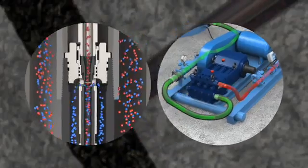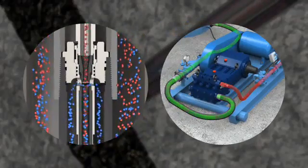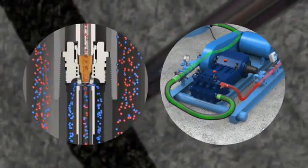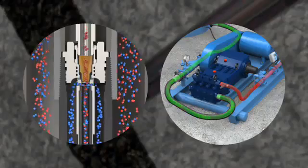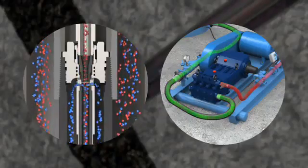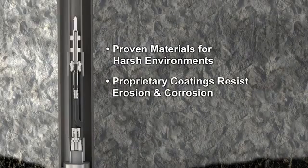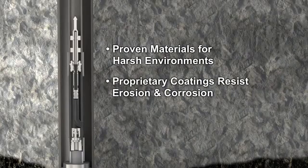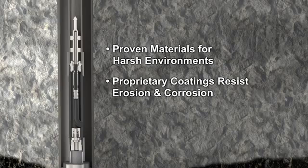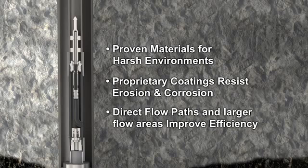The production rate is determined by adjusting the nozzle pressure through the throat and nozzle in combination with the reservoir energy at the pump. A wide range of production rate and lift capacity is possible. The JJ Tech jet pump is built with proven materials and proprietary coatings to improve reliability and resist erosion and corrosion. Direct flow paths and larger flow areas improve efficiency over other designs.